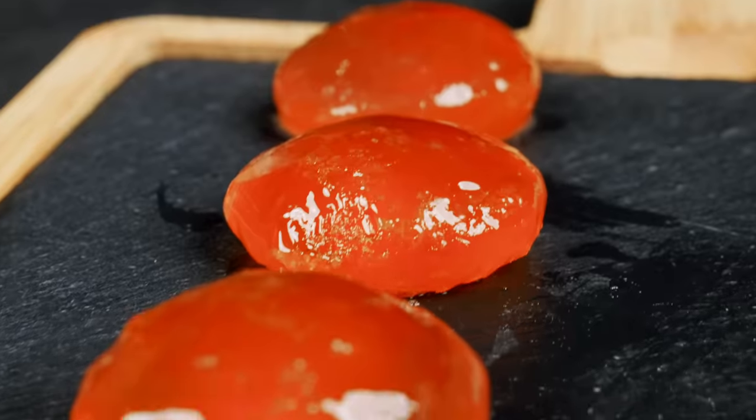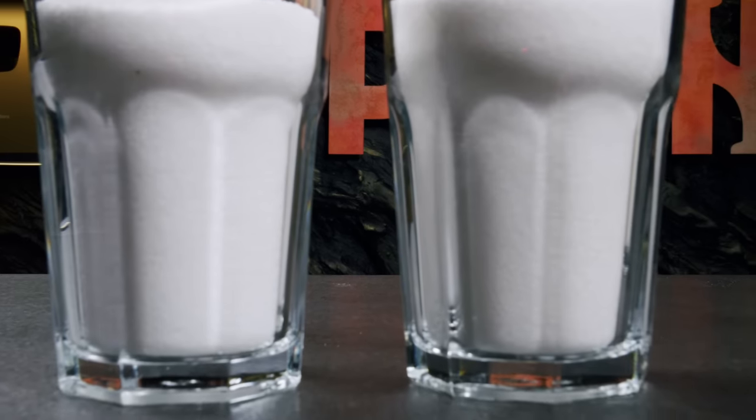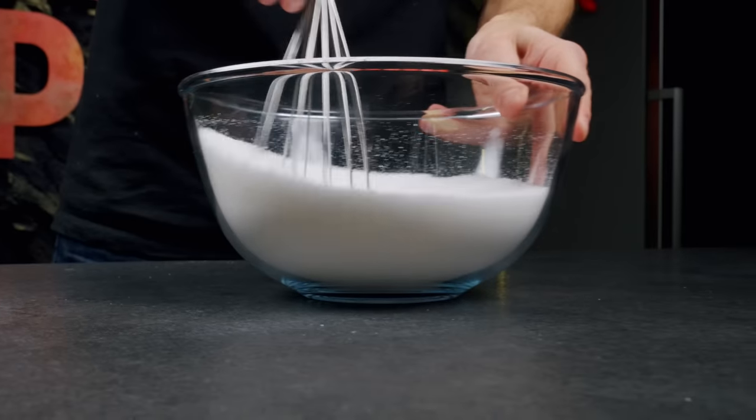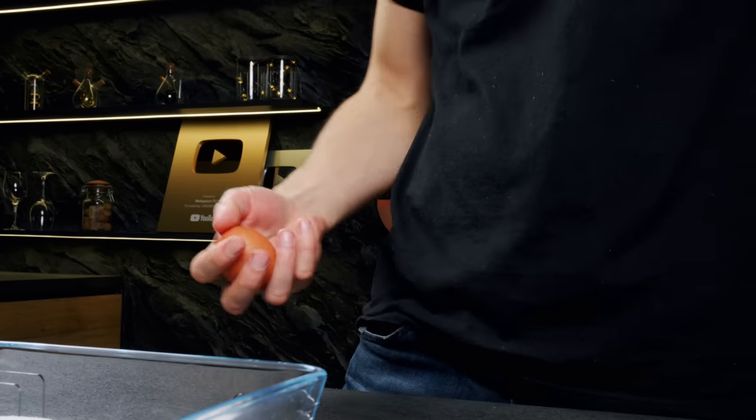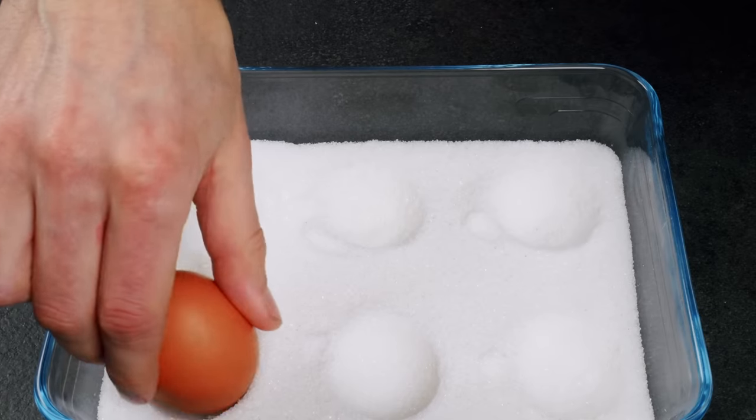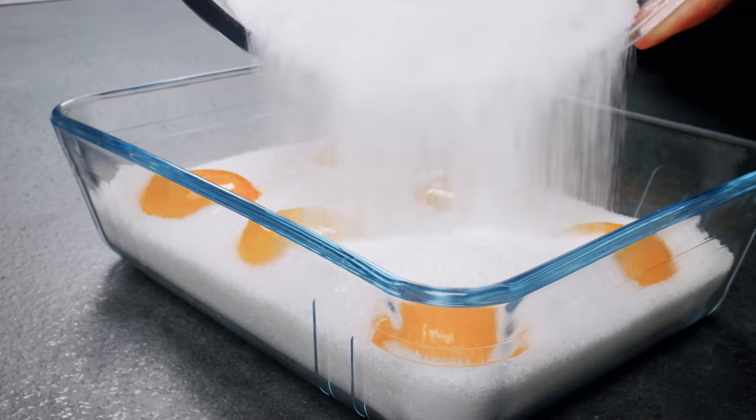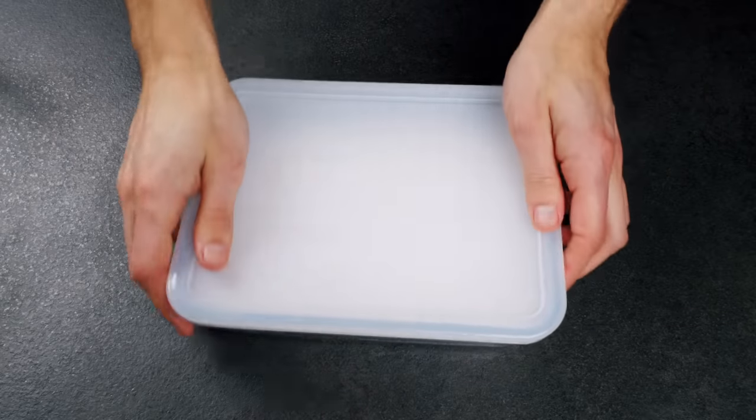From the remaining yolks, I will make egg yolk botarga. I mix together two parts salt and one part sugar and spread half of the mixture in a container. Then I make six indentations in the salt, add an egg yolk to each, and cover with the rest of the mixture. Seal the container and put it in the fridge for 4 days.